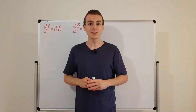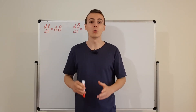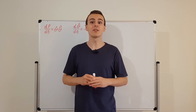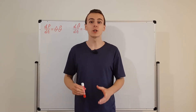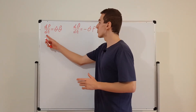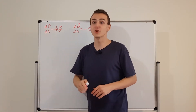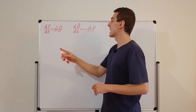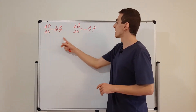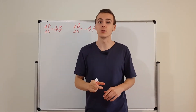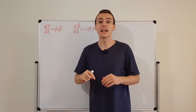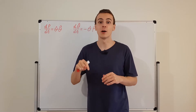Let's examine velocity in polar coordinates. First, let's identify some important relationships — specifically, the time derivatives of the unit vectors r̂ and θ̂. I actually derived these relationships in the previous video, which you can find by clicking on the link in the description below.